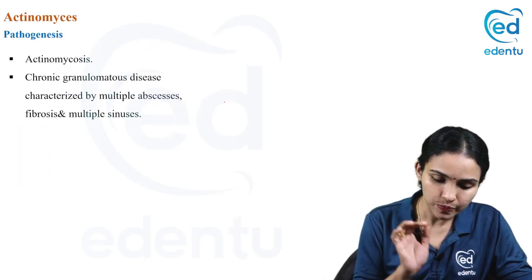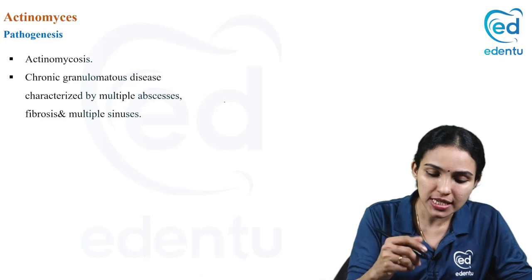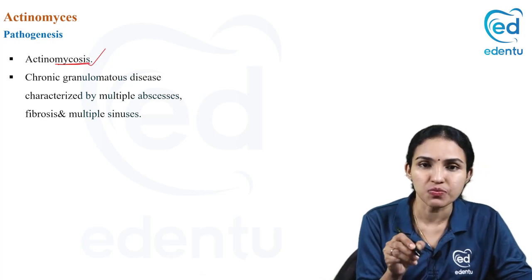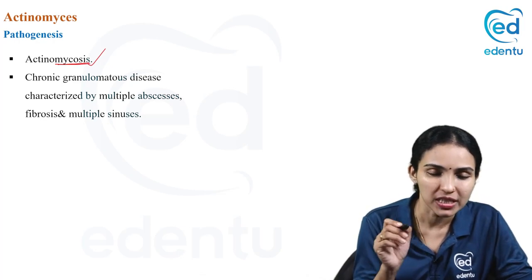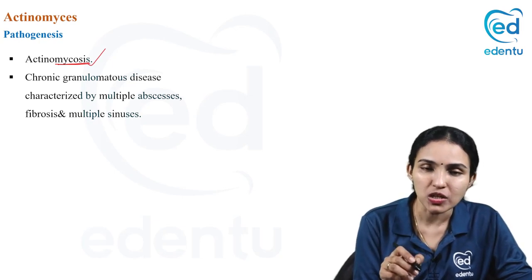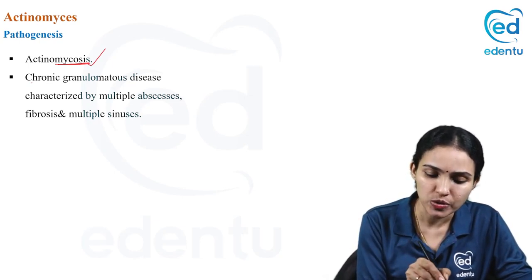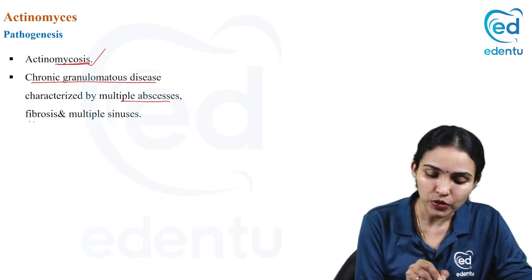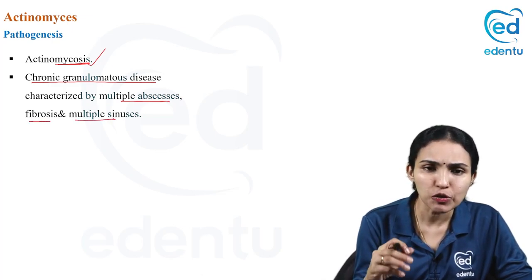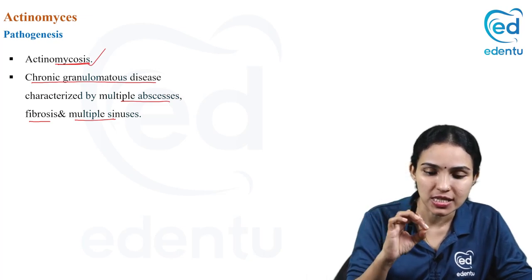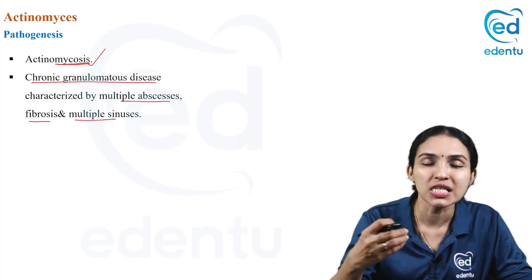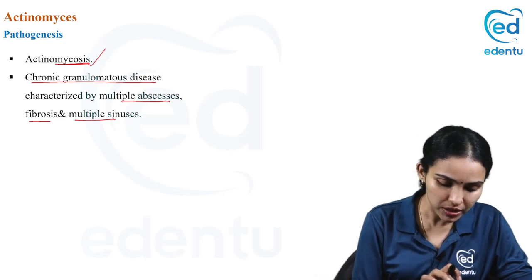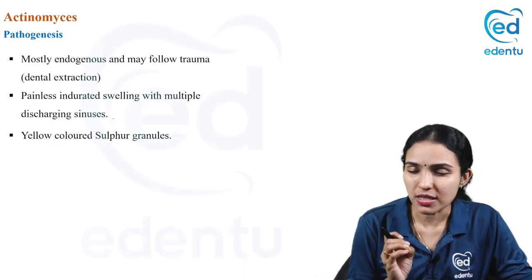Actinomyces causes a condition called actinomycosis — note the suffix 'mycosis' is typically used for fungal disease, but it's used here because this is a fungus-like bacteria. Actinomycosis is a chronic granulomatous disease characterized by multiple abscesses, fibrosis, and multiple discharging sinuses — openings to the skin through which granules are discharged, eventually leading to fibrosis.